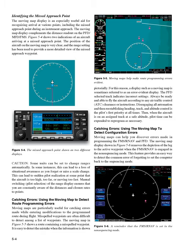Identifying the missed approach point: the moving map display is an especially useful aid for recognizing arrival at various points, including the missed approach point during an instrument approach. The moving map display complements the distance readout on the PFD/MFD/FMS. Figure 5-4 shows two indications of an aircraft arriving at a missed approach point. Caution: some units can be set to change ranges automatically. In some instances, this can lead to a loss of situational awareness as you forget or miss a scale change, leading to sudden pilot realization that the aircraft is too high, too far, or moving too fast. Manual switching — pilot selection — of the range display ensures that you are constantly aware of the distances and closure rates to points.